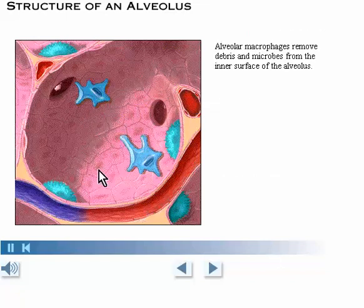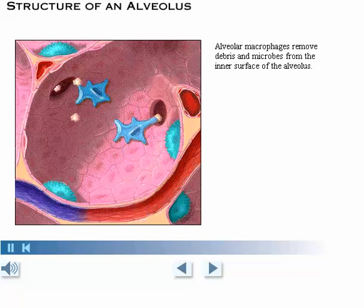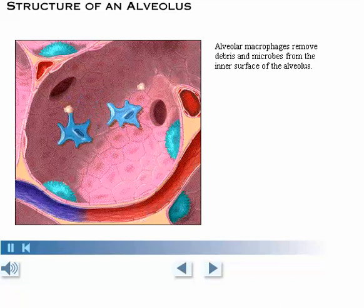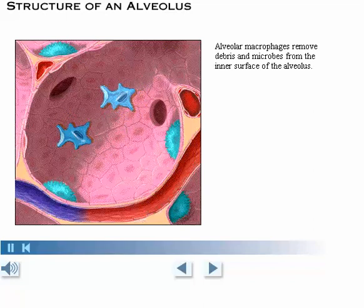The alveolar macrophages, or dust cells, creep along the inner surface of the alveoli, removing debris and microbes. The alveolus also contains scattered surfactant-secreting, or type 2, cells.